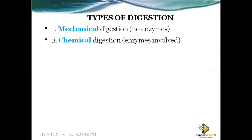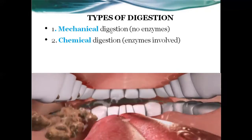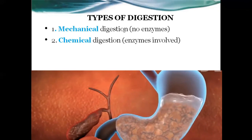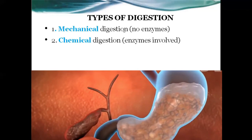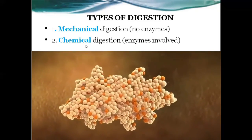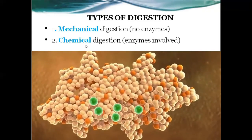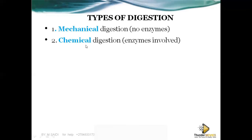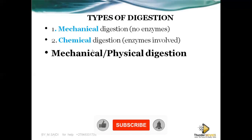Let's look at the different types of digestion. We have two types: number one, mechanical digestion, and number two, chemical digestion. Mechanical digestion means there is no use of enzymes — sometimes we call it physical digestion. You use energy, such as when you break down food with your teeth or when the stomach walls squeeze the food. Chemical digestion uses enzymes or chemicals. Enzymes are chemicals which speed up the rate of chemical reaction.